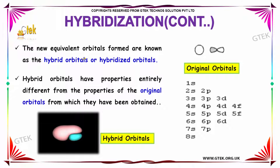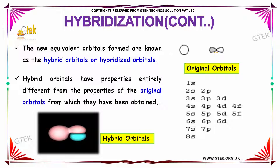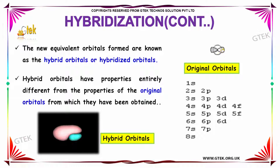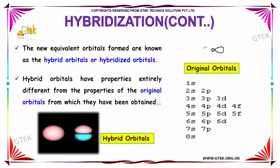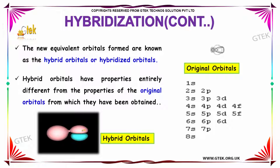The new equivalent orbitals formed are known as hybrid orbitals. You are able to see this is the original orbital — now it is moving and trying to change, and the outcome is called hybrid orbitals. The hybrid orbitals have properties entirely different from the properties of the original orbitals from which they have been obtained.